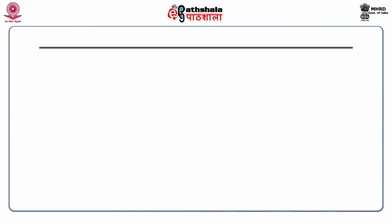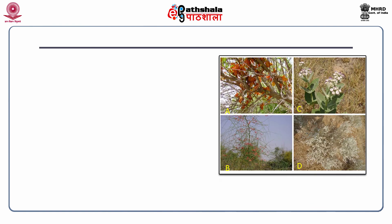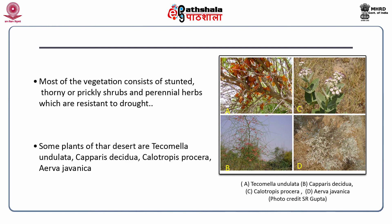Some other examples of desert plants include Tachamela, Capparis, Calotropis and Aerva. Most of the vegetation that grows in deserts consists of stunted, thorny and prickly shrubs and perennial herbs which are resistant to drought.